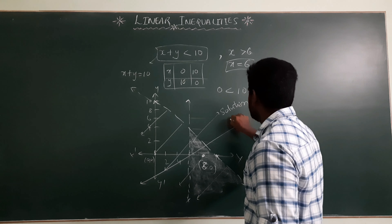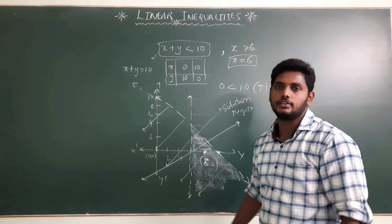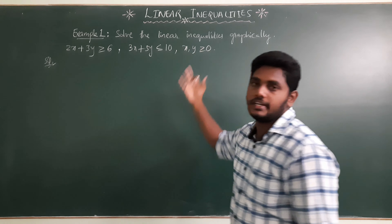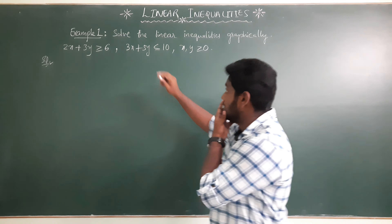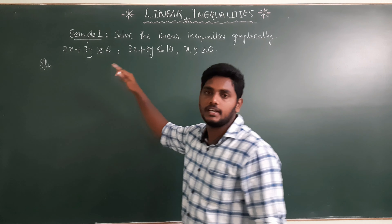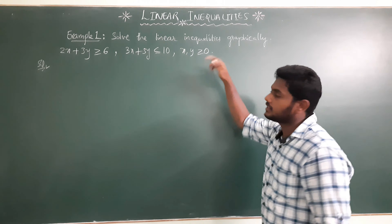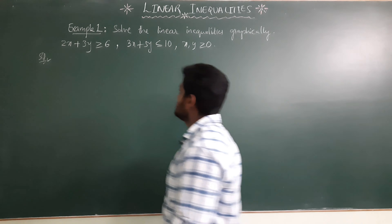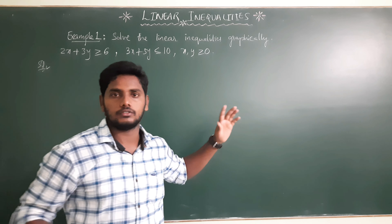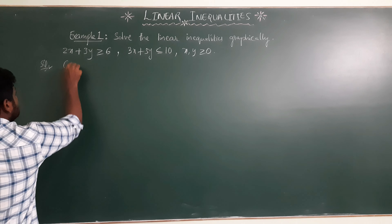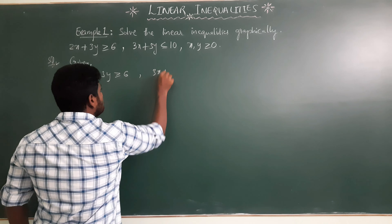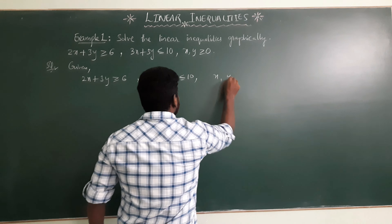Like that, we need to draw multiple lines based on the number of inequalities: 1 inequality means 1 line, 2 inequalities means 2 lines, and so on. The solution region is the common shaded region where any point satisfies all the linear inequalities. Now, here is an example: solve the linear inequalities graphically — 2x + 3y ≥ 6, 3x + 5y ≤ 10, and x, y ≥ 0.